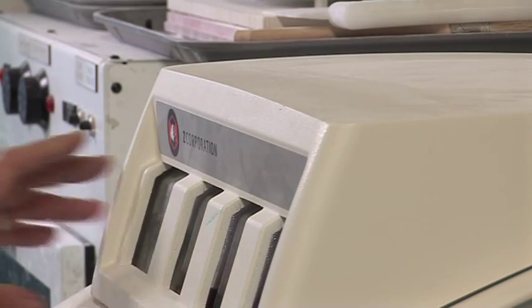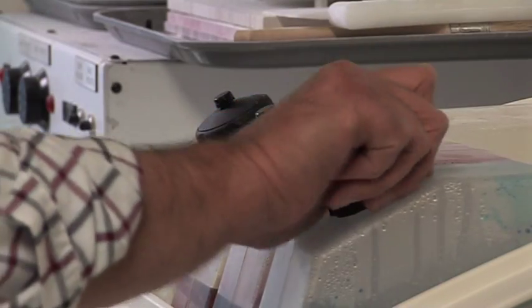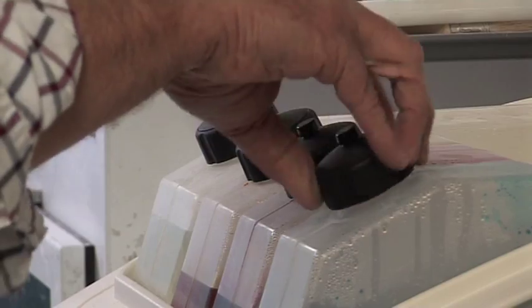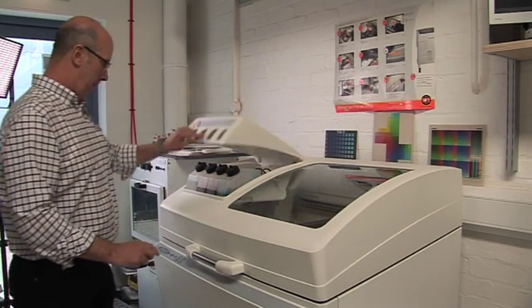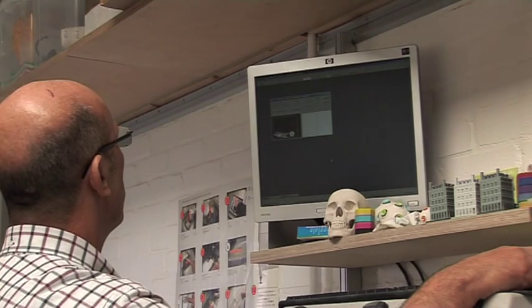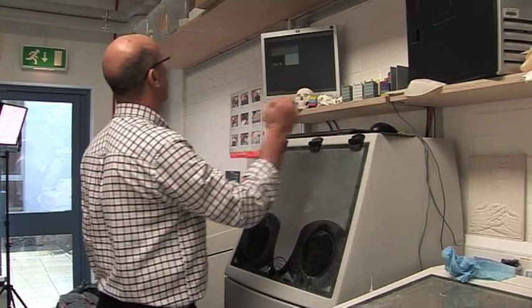This is a Z-Corp 510 color printer just being set up ready to print the scanned objects. The binder levels are checked, the model setup is checked and the 3D print button is hit.